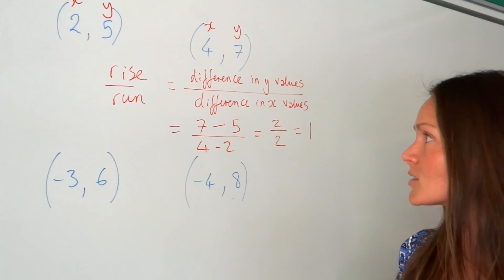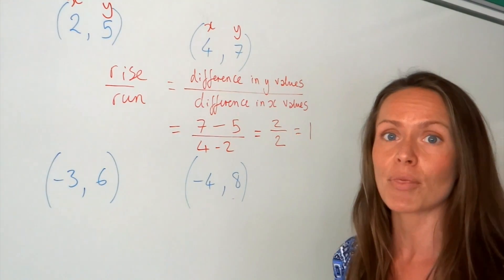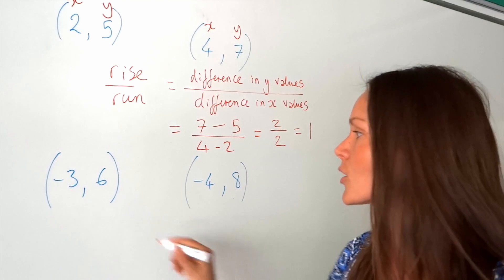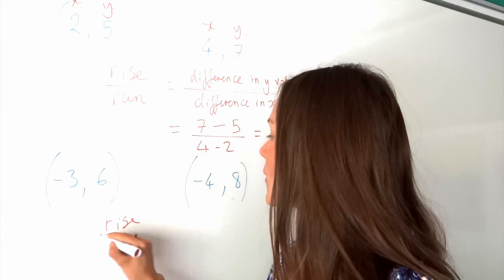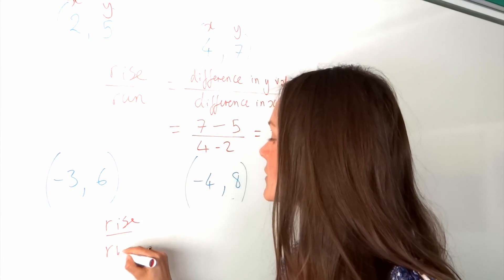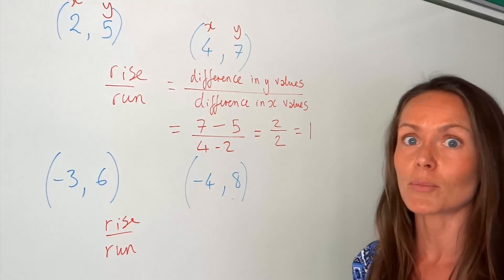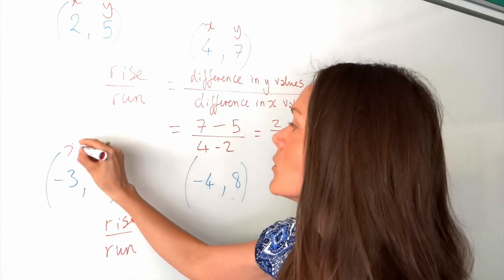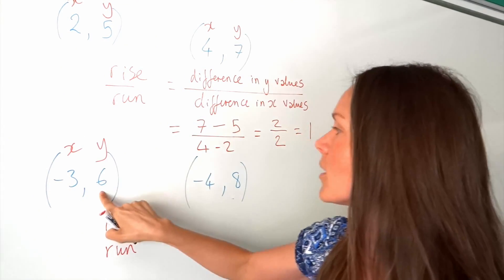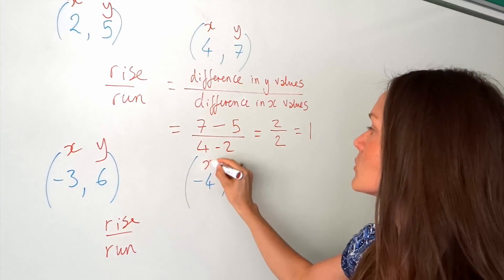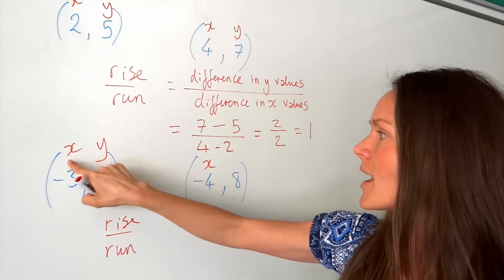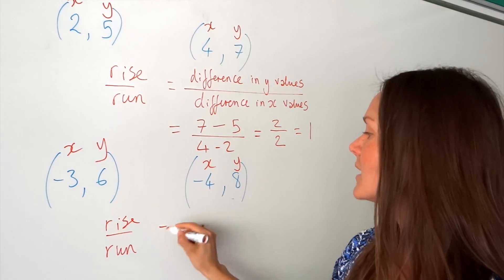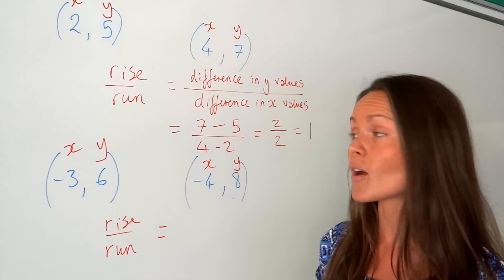On to the next one. I'm going to do exactly the same thing — use my method, rise over run. I'm going to subtract the y values and then subtract the x values and divide. Remember, x is first, y is second, so it's always in alphabetical order: x, y.